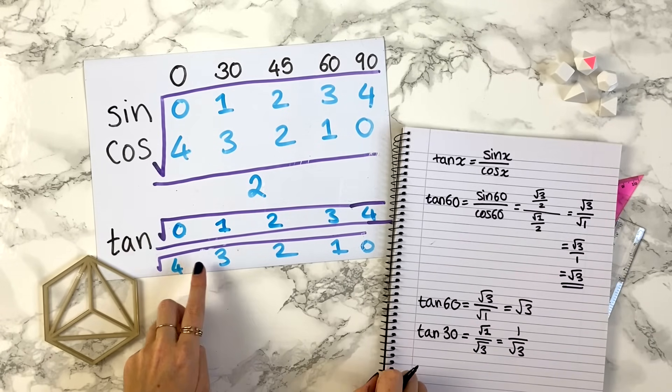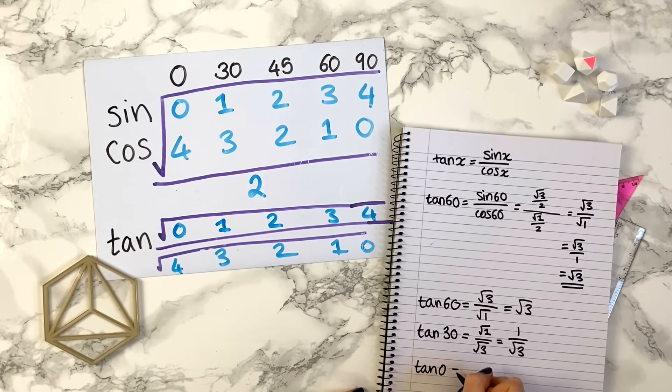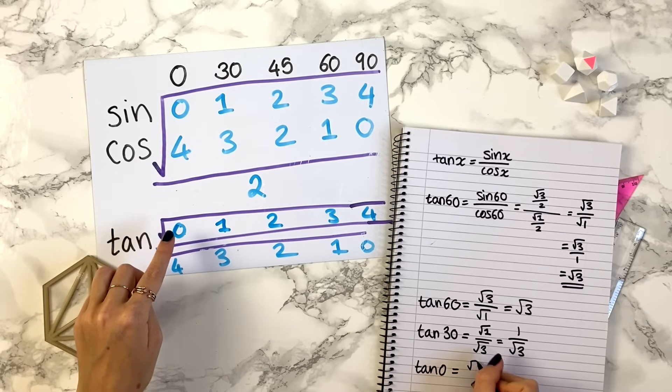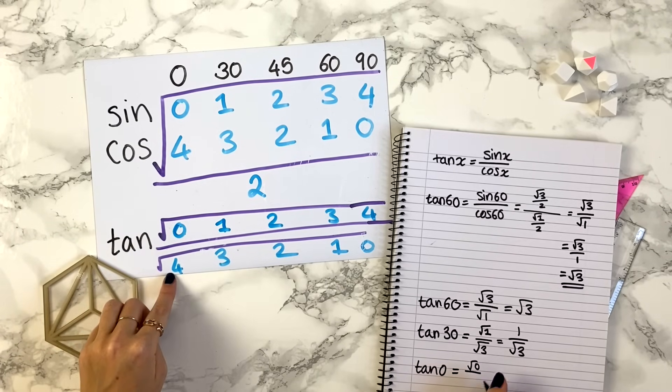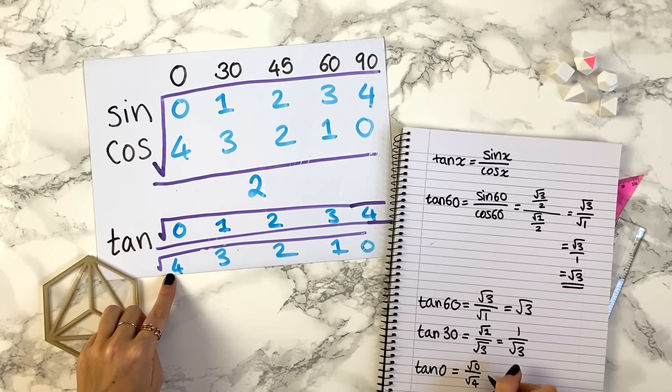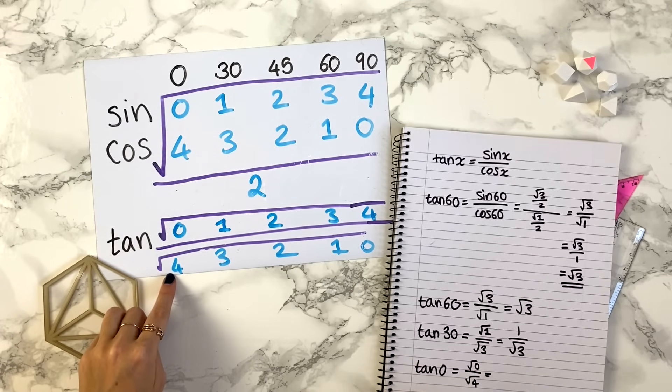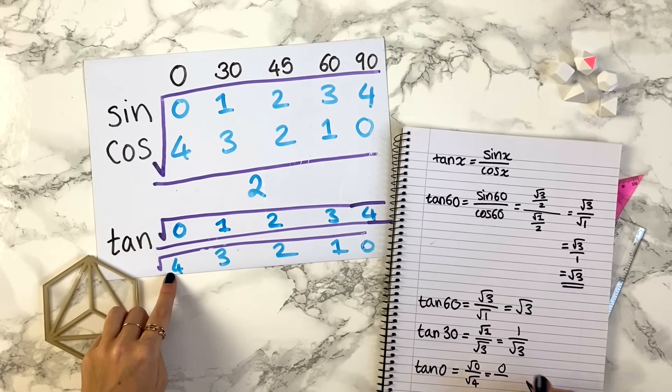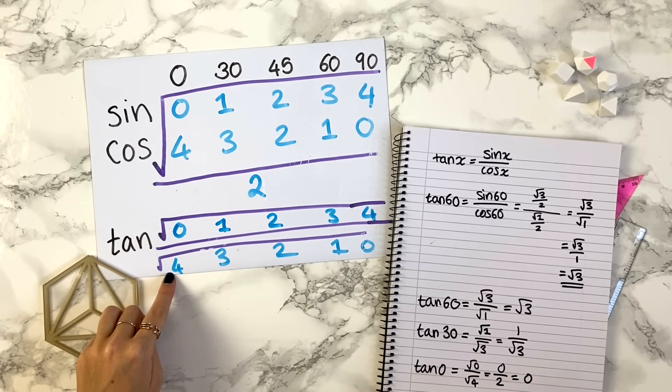Or let's try tan of 0. Tan of 0 is the square root of 0 divided by the square root of 4. Now the square root of 0 is 0 on the top, so we have 0 over the square root of 4 is 2, and that's just going to be 0, as 0 divided by anything is 0.